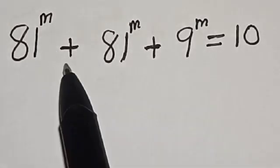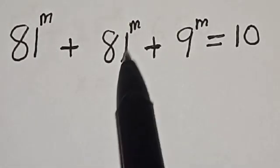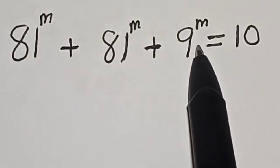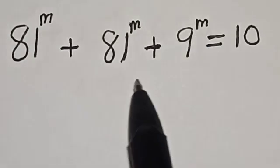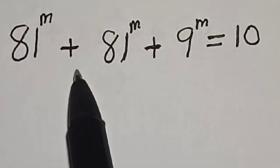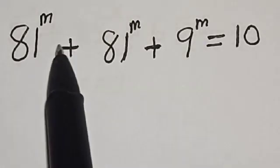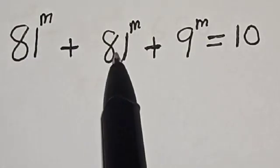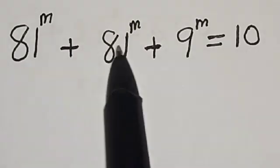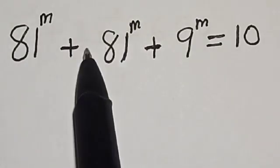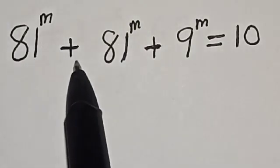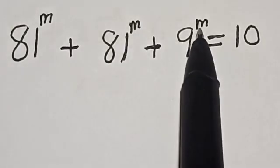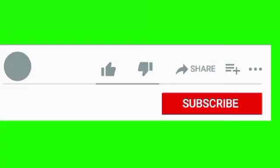81 raised to power m plus 81 raised to power m plus 9 raised to power m is equal to 10. Hi everyone, welcome to my class. In this class, we want to find the value of m from this given nice Olympiad exponential equation.